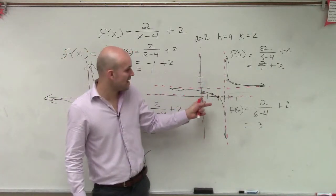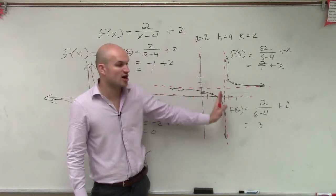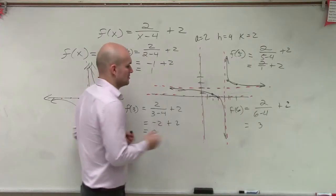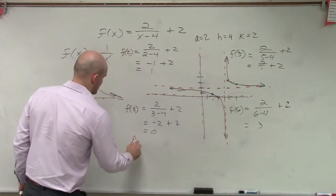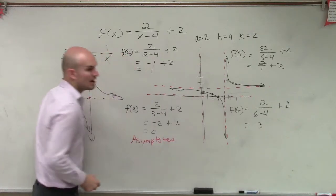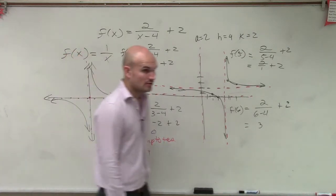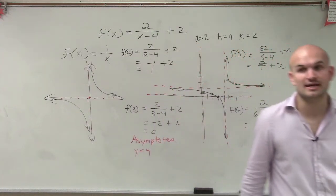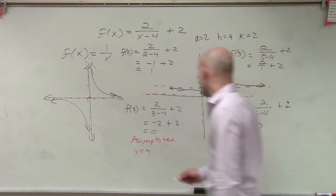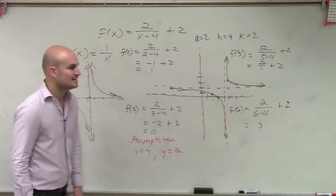And our vertical asymptote is at, so our asymptotes, we have a vertical asymptote at x equals 4. It's written as an equation for a line. And also, we have an asymptote at y equals 2.